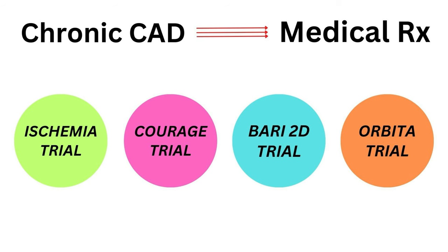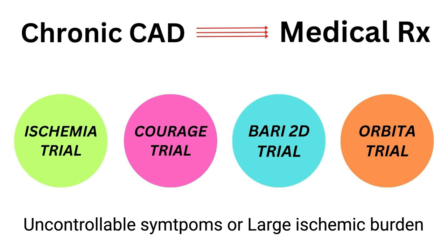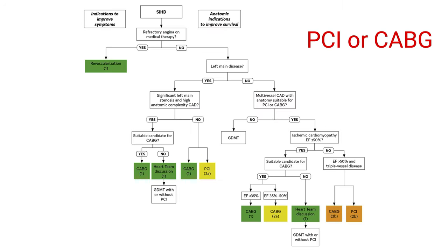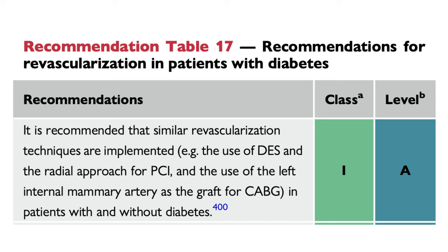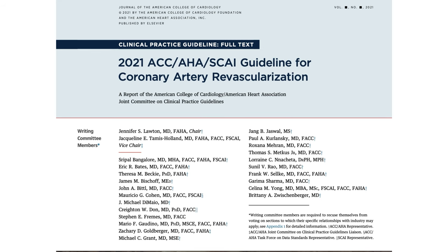Revascularization for chronic coronary disease is recommended for patients with uncontrollable symptoms or a large ischemic burden. The choice between coronary bypass graft or percutaneous intervention depends on the extent of the disease. For patients with diabetes and multivessel disease, bypass graft with arterial graft is preferred over complex PCI, as long as patient characteristics allow for surgery, considering factors like frailty or cerebrovascular disease. PCI with newer-generation drug-eluting stents is acceptable for patients with less extensive disease. More detailed information can be found in the ACC/AHA guidelines on myocardial revascularization.